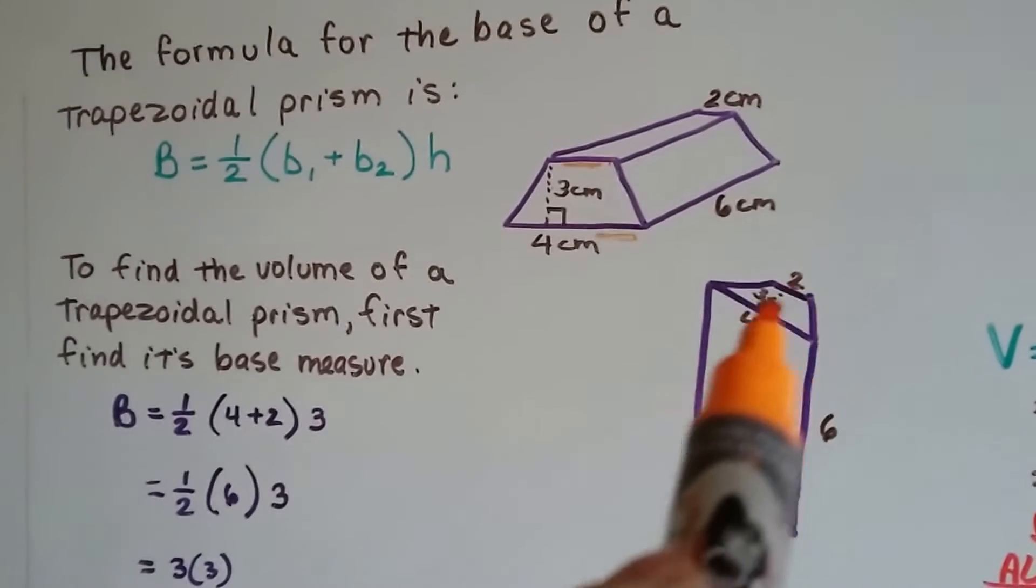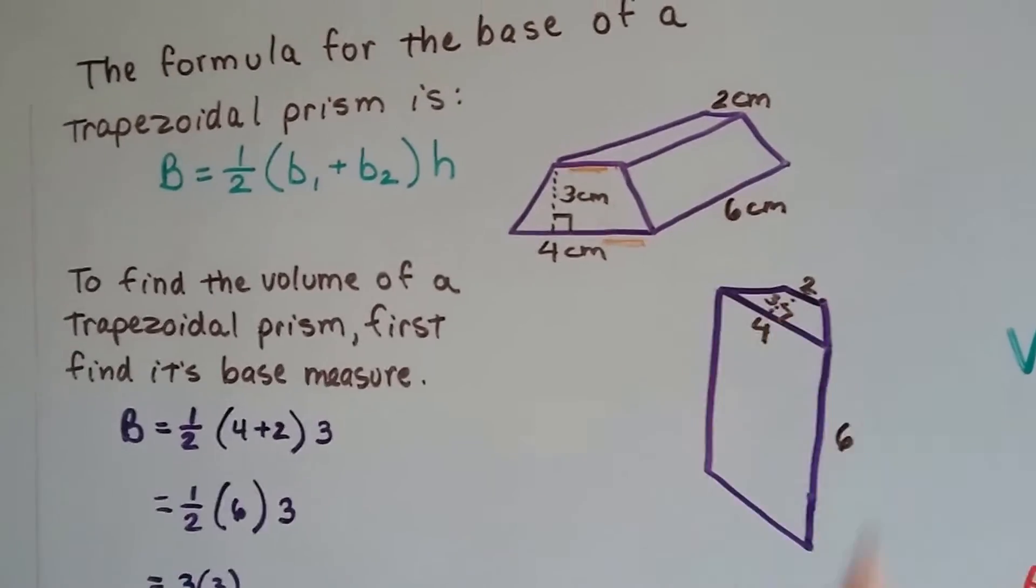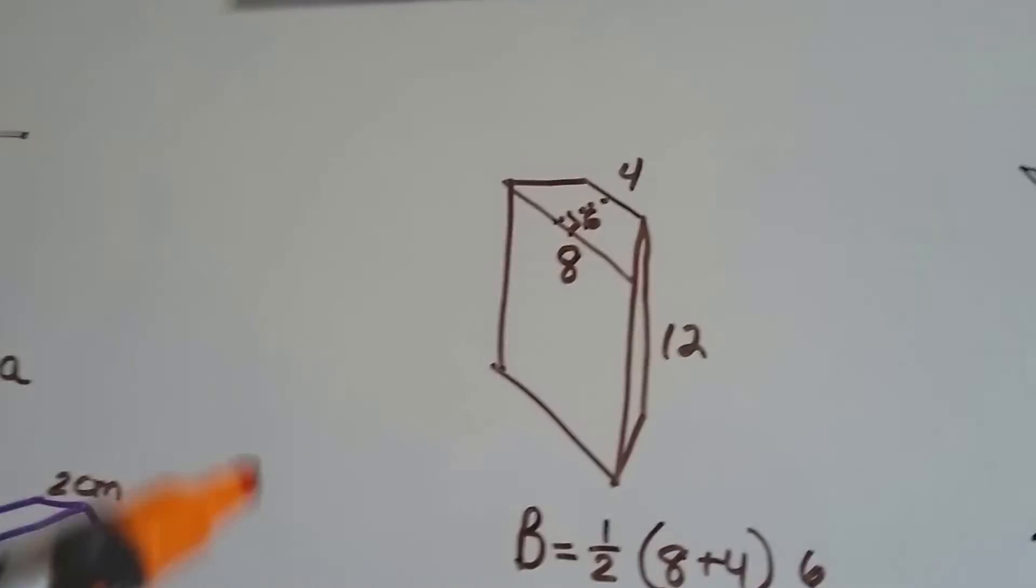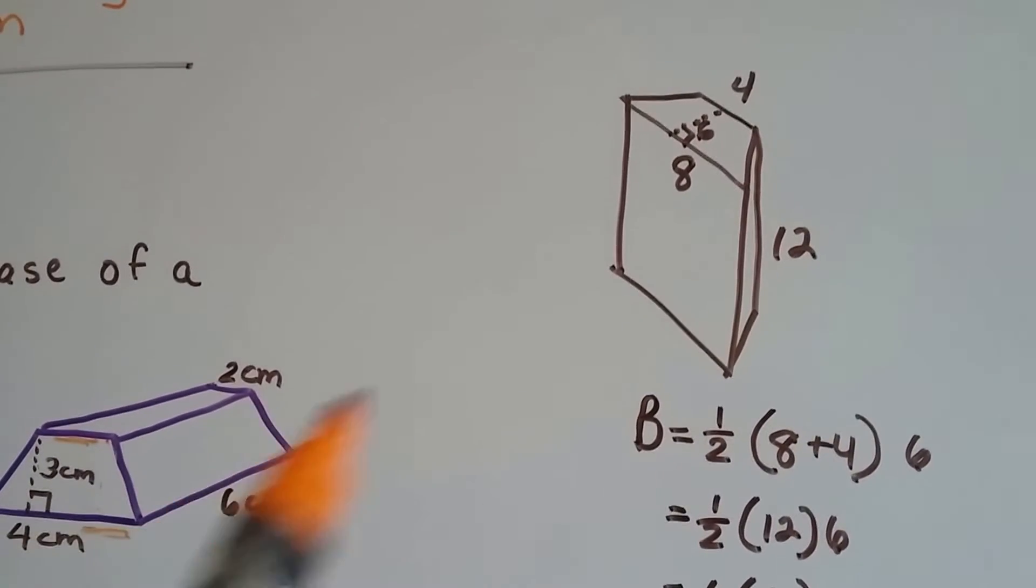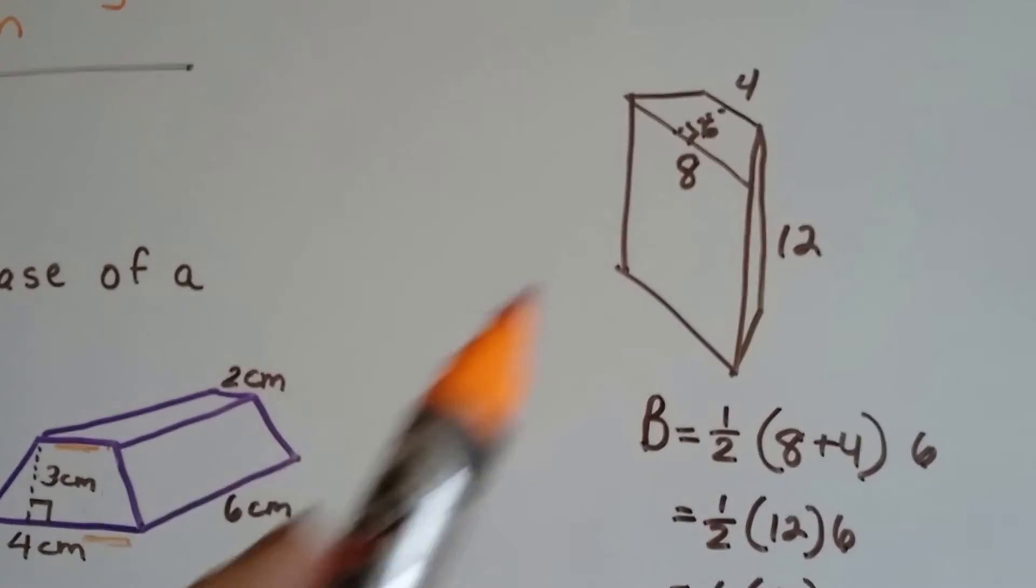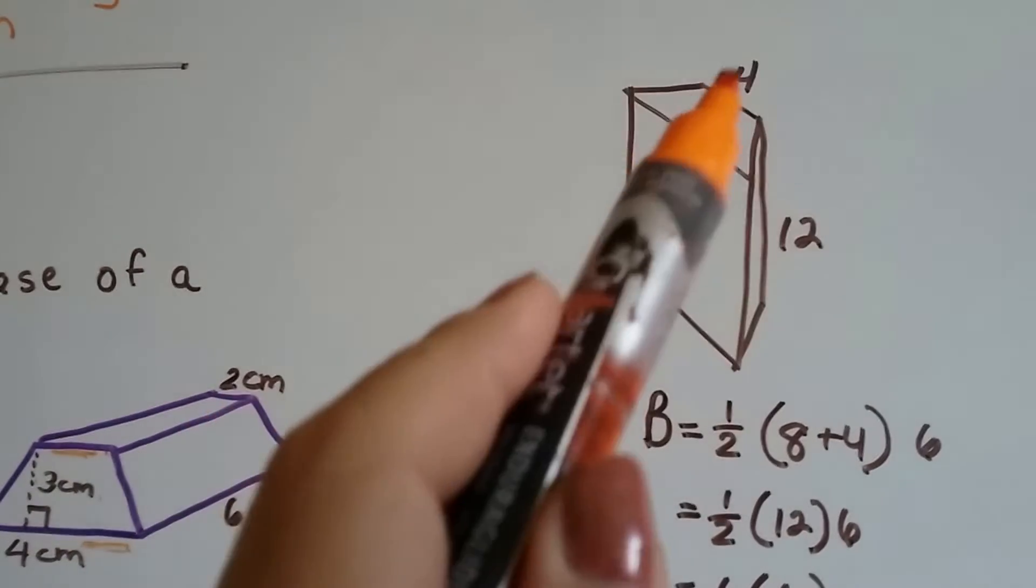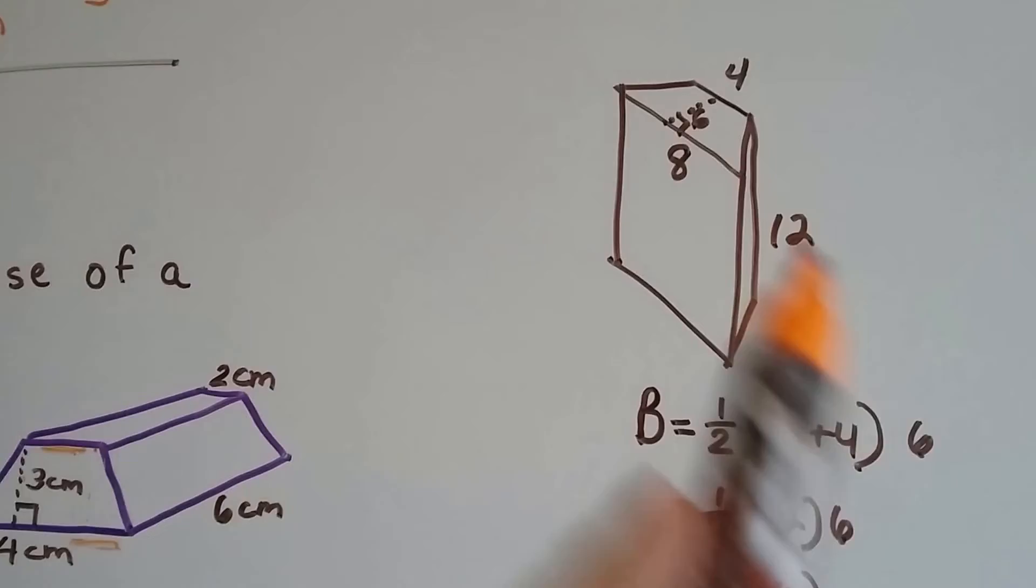But, what would happen if we took this 2, 3, 4, and 6, and doubled every single one of them, and made them a 4, 6, and an 8, and a 12? So instead of 4, that's now an 8. Instead of 3, that's now a 6. Instead of 2, it's a 4. Instead of 6, that's a 12. It's all doubled.